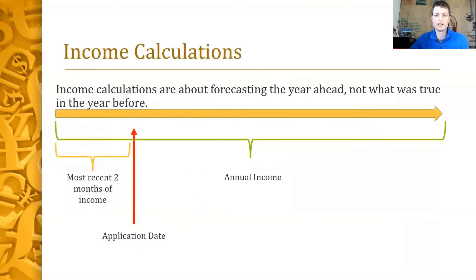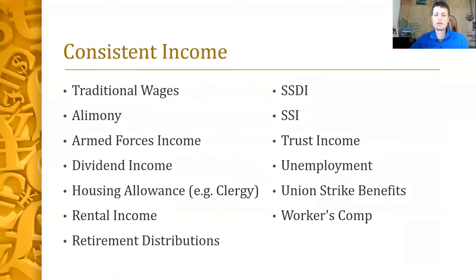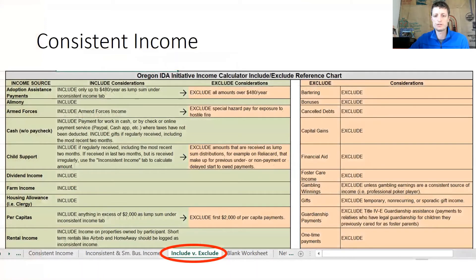The income calculation is about forecasting the year ahead, not the past year, so the most recent two months of income gives a snapshot for their future income. This is a summary of what is considered consistent income and should be included in income calculations. On the include and exclude tab, you can read through all the details about what to include, exclude, and what to consider — for example, detailed considerations for SSI, cash, full-time students, unemployment, and more.